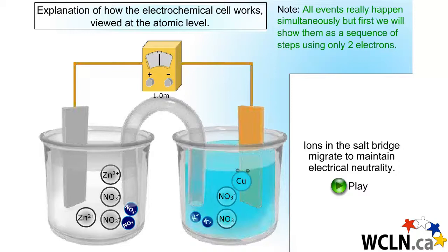In the left beaker, it's the reverse story. The electrons left, so negative charge left. If the nitrate ions migrate to the left, that negative charge will be restored. So two nitrate ions migrate to the left.